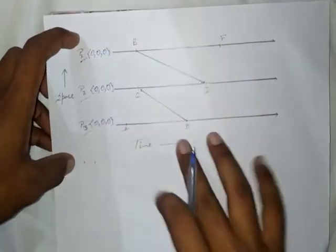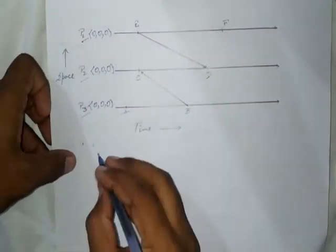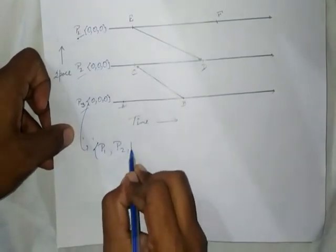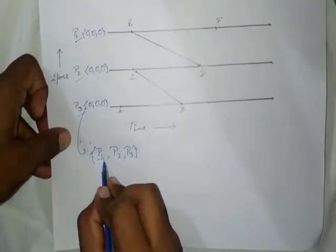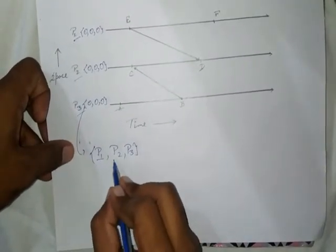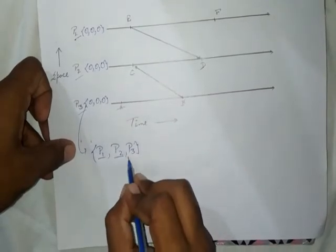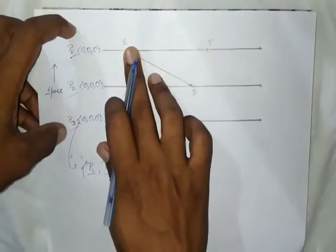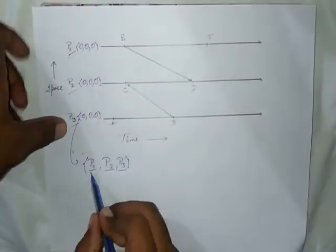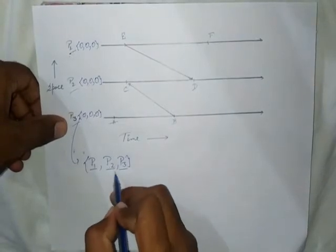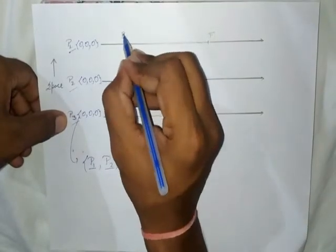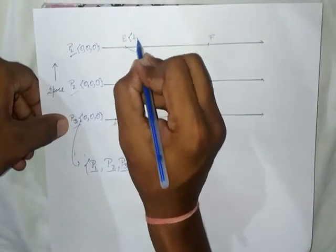Now let us see how these vectors are formed. The vector is structured as [P1, P2, P3], so the counter of process P1 comes in the first place, P2 in the second place, and P3 in the third place. With this we can start filling the vectors for each event. For event E1, which belongs to process P1, we increment the counter of P1 by 1 and the remaining counters for P2 and P3 stay at 0. So the vector for event E1 is [1, 0, 0].